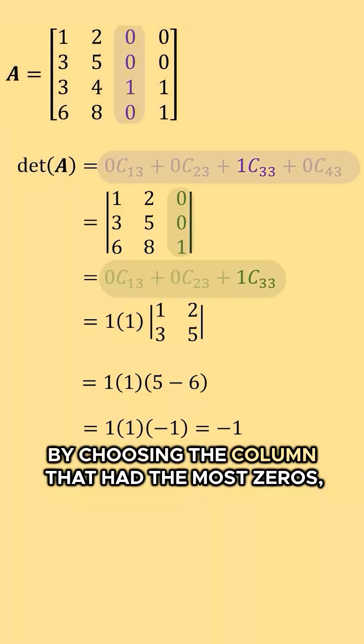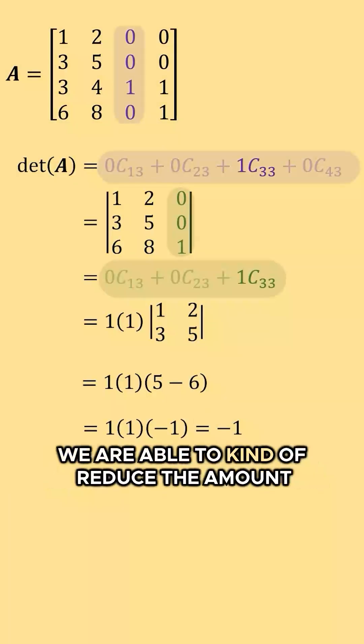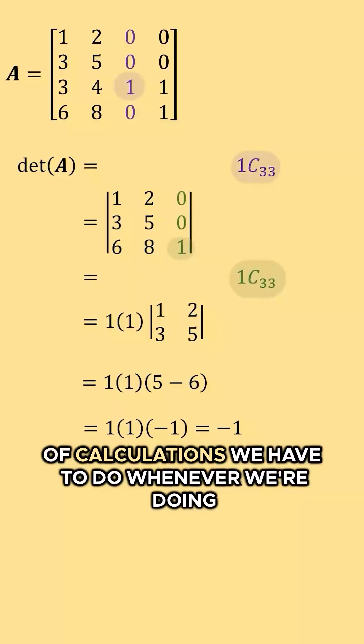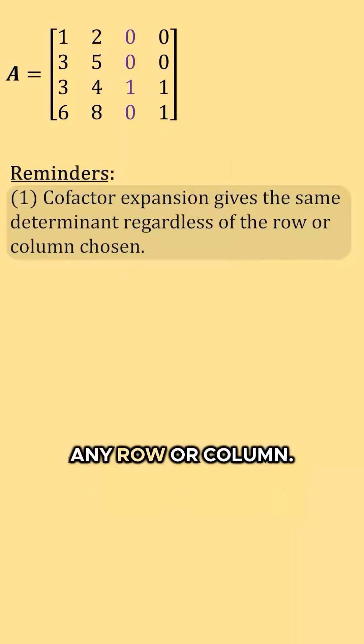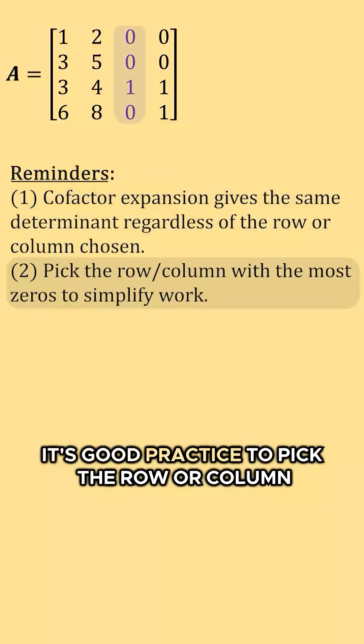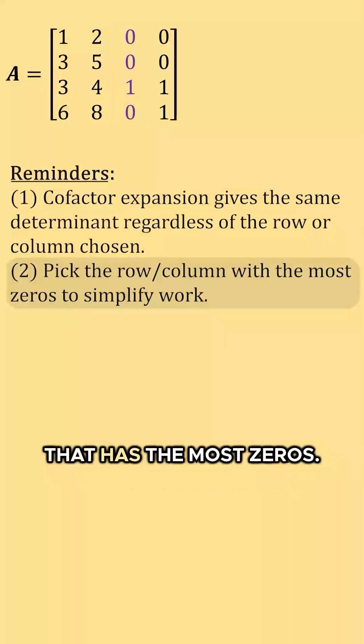By choosing the column that had the most zeros, we are able to reduce the amount of calculations we have to do whenever we're doing cofactor expansion. So for some simple reminders, you can expand across any row or column. It's good practice to pick the row or column that has the most zeros.